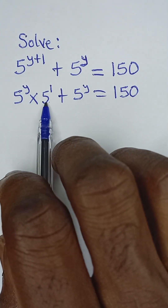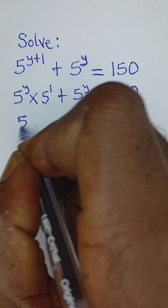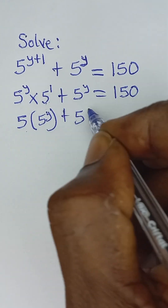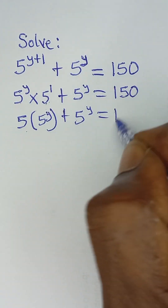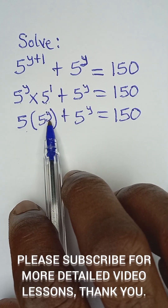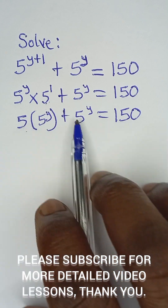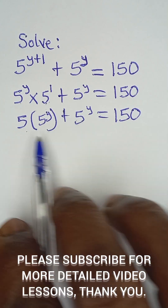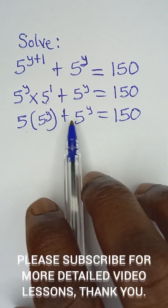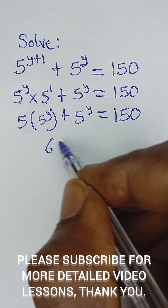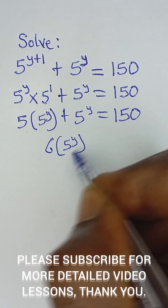Now this is 5 multiplying 5 raised to the power y, so I can write this as 5 multiplied by 5 raised to the power y, plus 5 raised to the power y, is equal to 150. This is 5 of 5 raised to the power y, and this is just 1 of 5 raised to the power y. So we can add them together because they are like terms: 5 of 5 raised to the power y plus 1 of 5 raised to the power y gives us altogether 6 of 5 raised to the power y.